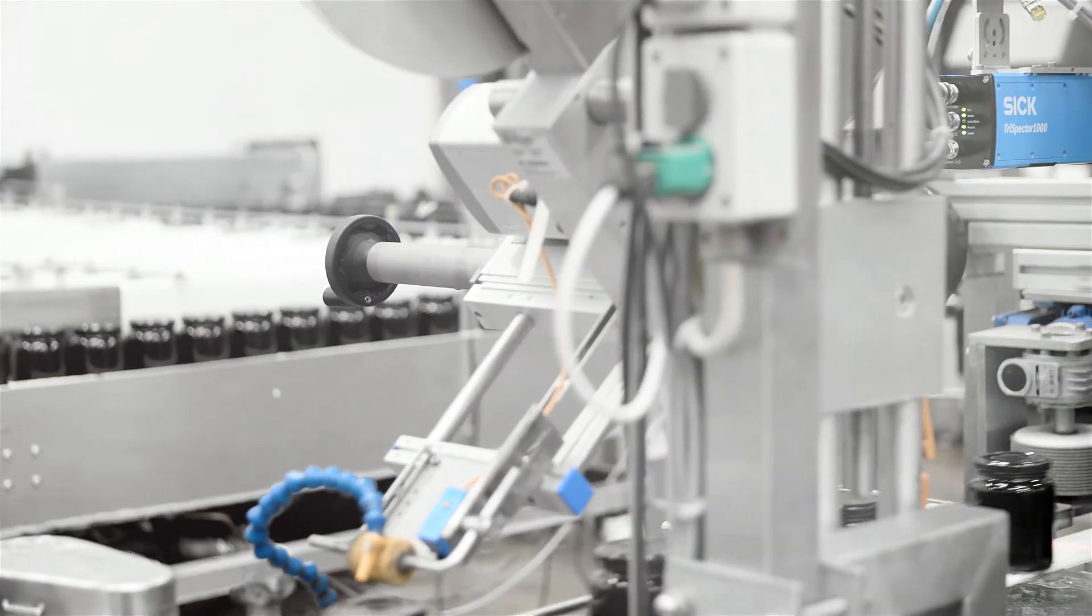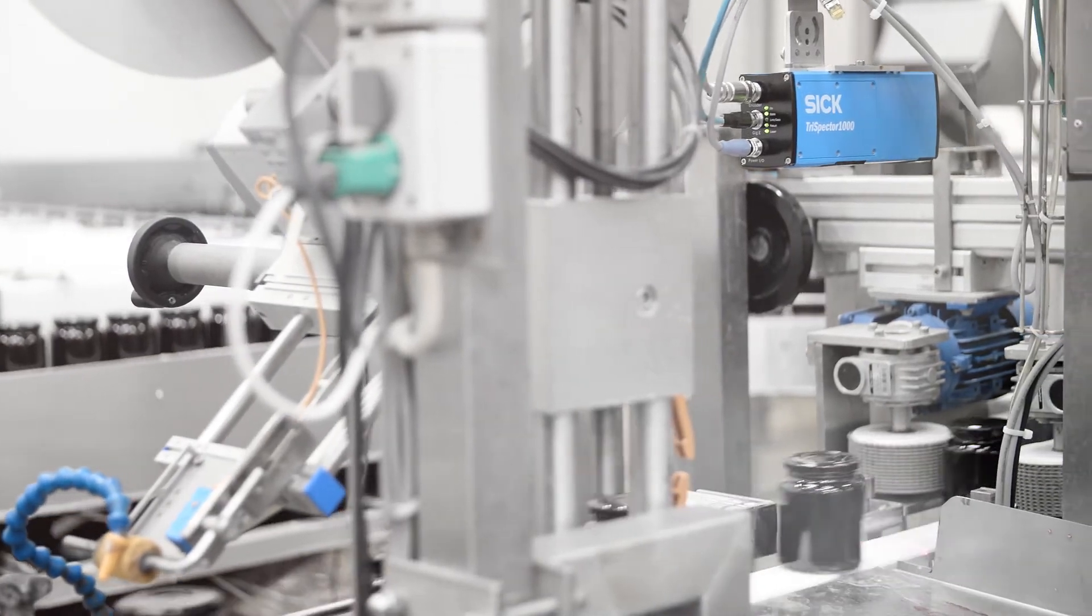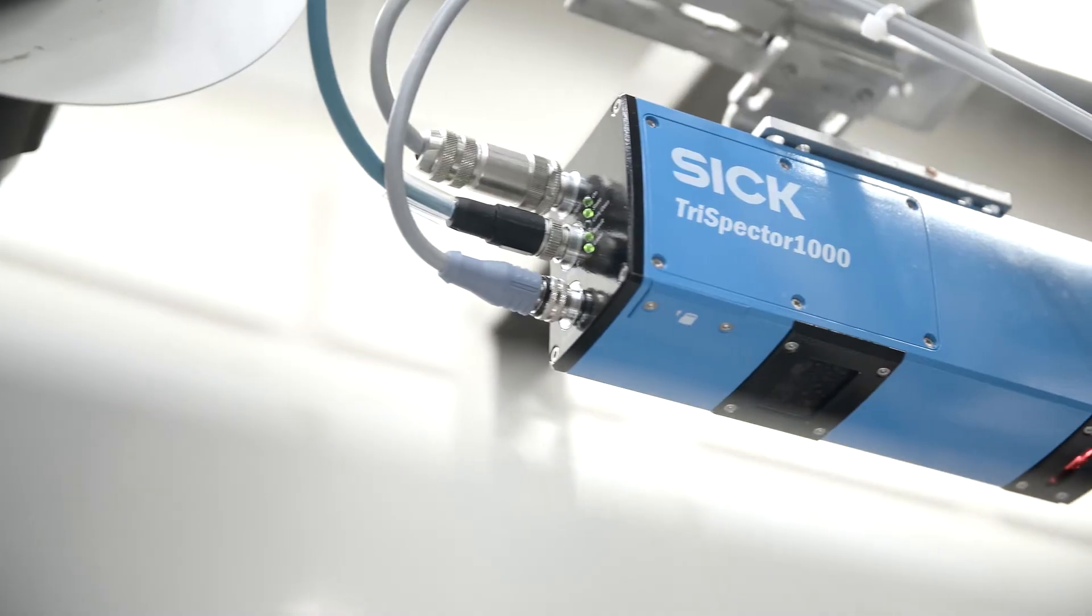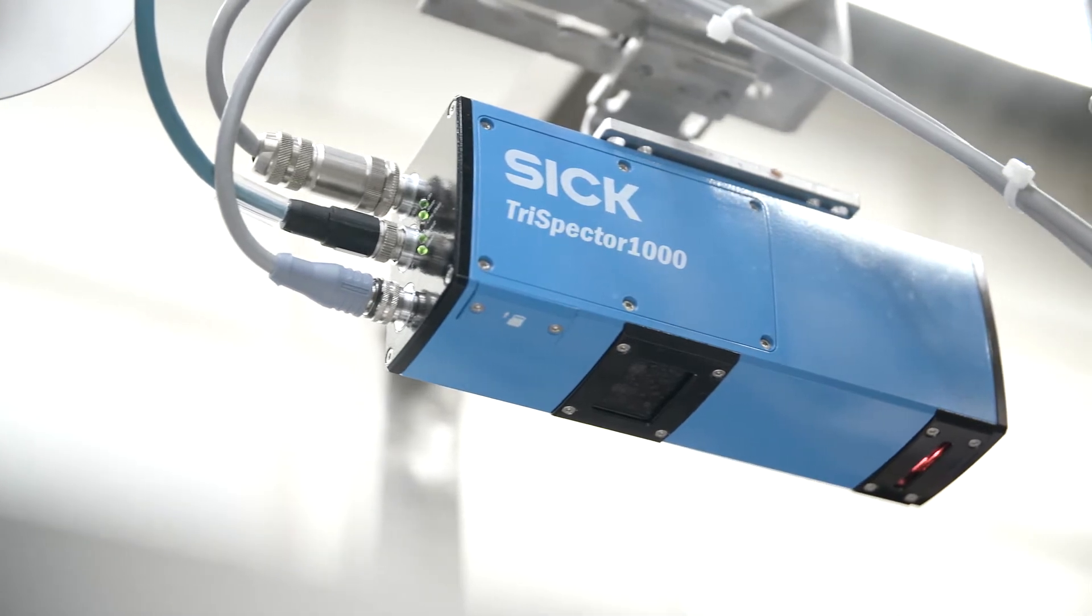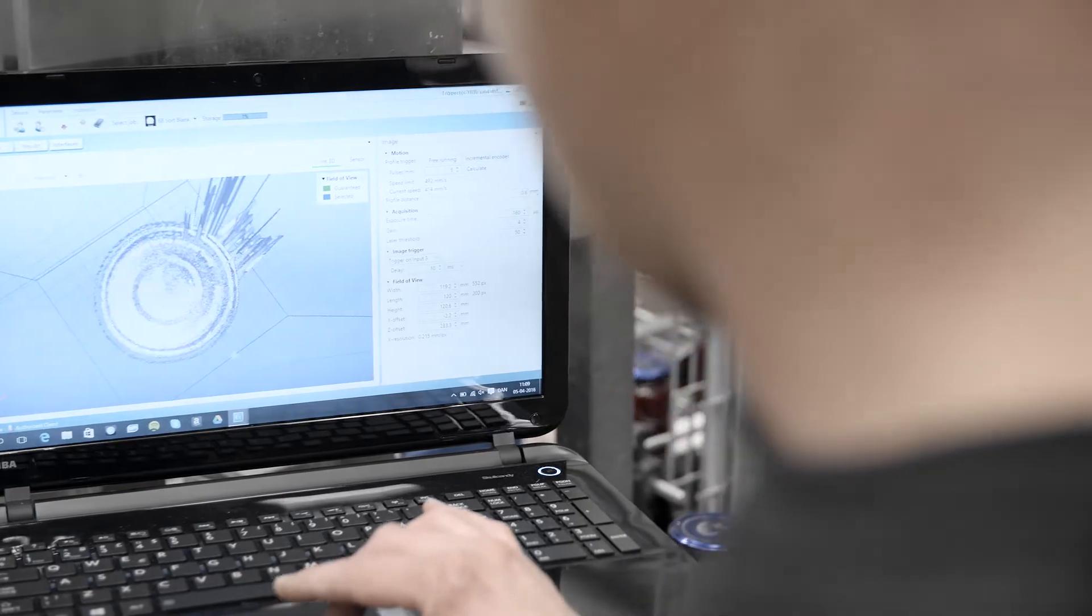We contacted SICK and SICK Telbus to find a sensor that could do that. The Trispector is the only one that's been working perfectly. It measures the volume, not the height, and it's a safer way to detect the vacuum.